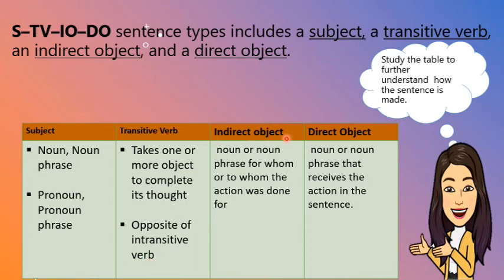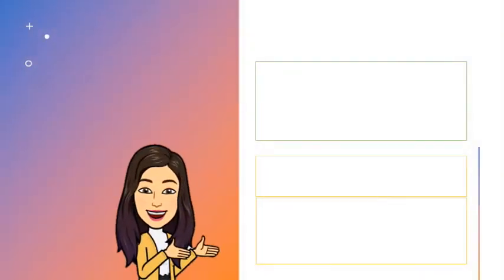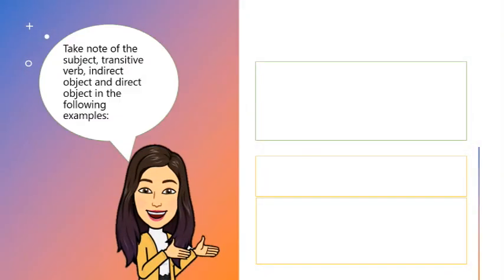When we say indirect object, this is a noun or a noun phrase for whom or to whom the action was done. The direct object is a noun or noun phrase that receives the action in the sentence. Take note of the subject, transitive verb, indirect object, and direct object in the following examples.